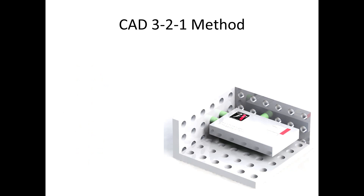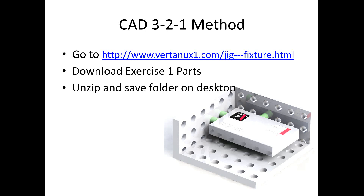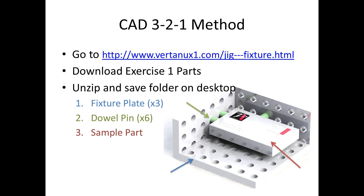We're going to take a look at the CAD 3-2-1 method of securing this. As you can see in the lower right corner, this is essentially just a mock-up of a quick fixture. It's more just an exercise that we can put together to see the theory in action. You can go to vertani1.com/jig-fixture.html to find these parts. Download the exercise 1 parts — they're in a variety of formats. The SOLIDWORKS parts are only good for 2019 or newer, so if you can't use those, grab the iJust files or the Parasolid files. Unzip them onto your desktop. In there should be a fixture plate, dowel pin, and sample part, including a half-height configuration of the fixture plate.